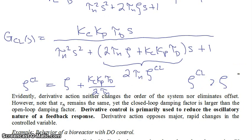What else happens here? Well, evidently, derivative action neither changes the order of the system, because we started out with a second order system and we ended up with a second order system, nor does it eliminate offset, because in this standard form, the numerator is not equal to 1, so it doesn't eliminate offset.